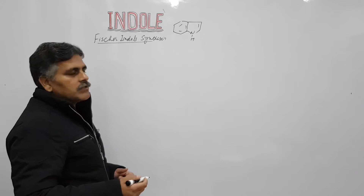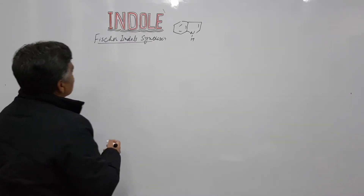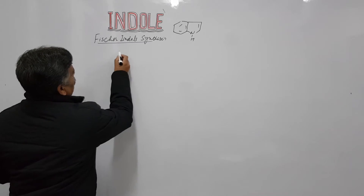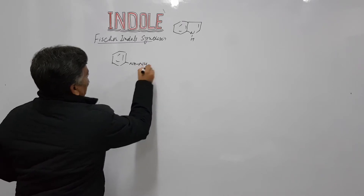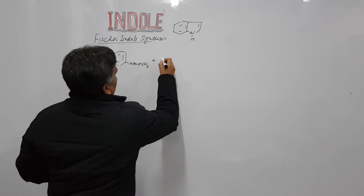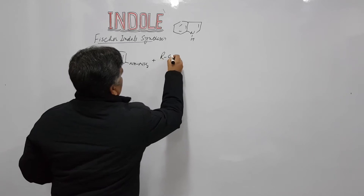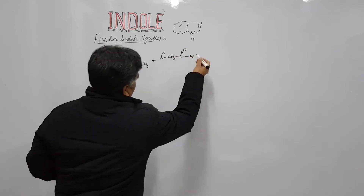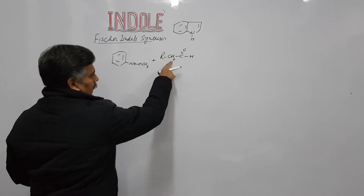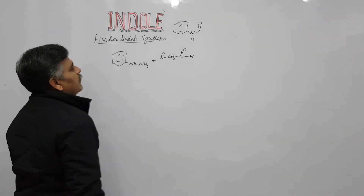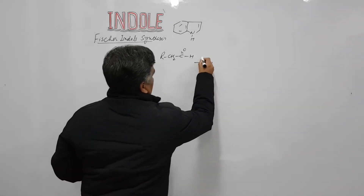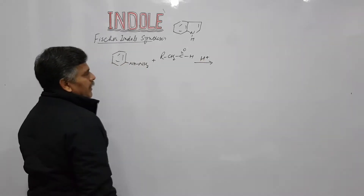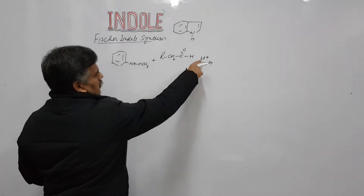Another important feature of this reaction is that a number of substituted indole derivatives can be synthesized by following Fischer indole synthesis. For example, we have phenylhydrazine (Ph-NH-NH2) reacting with R-CH2-CO-H. This carbonyl compound possesses alpha hydrogen atoms, which can be utilized in later steps for enolization. The reaction is catalyzed by the presence of sulfuric acid.